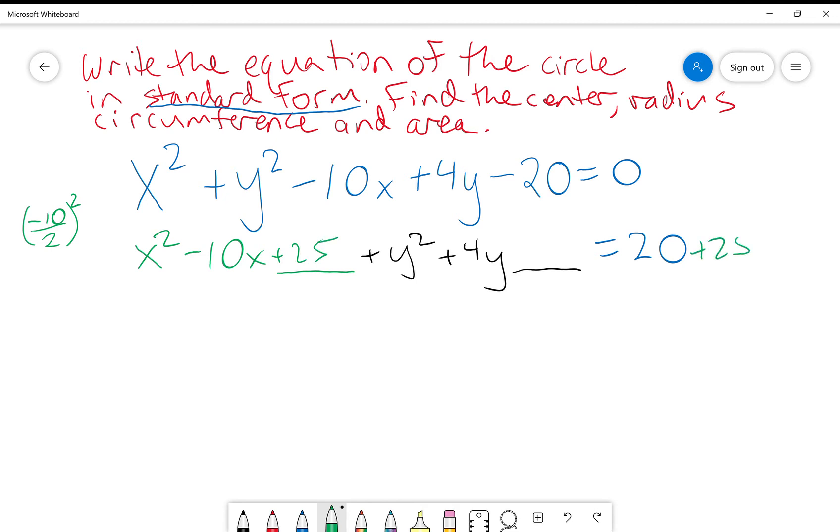And I've got to add 25 over here as well to keep things balanced. We've got to balance the equation. I can add whatever I want as long as I add it to both sides. I can multiply by whatever I want as long as I do it to both sides, keeping that equation balanced.